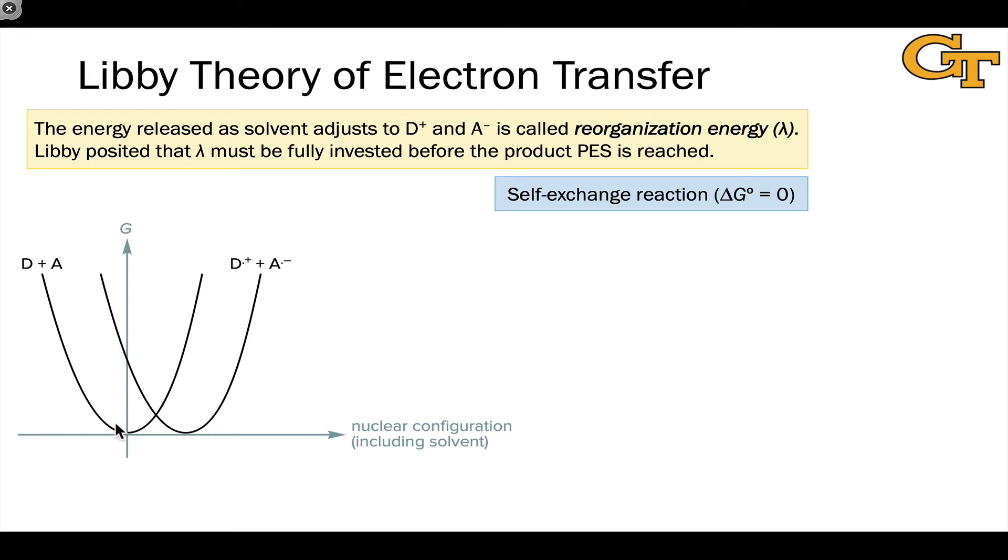Because the equilibrium energies of D plus A and D dot plus and A dot minus are equal, this is what we call a self-exchange reaction where the overall thermodynamic free energy change is zero. Notice that these wells are at equal energy.